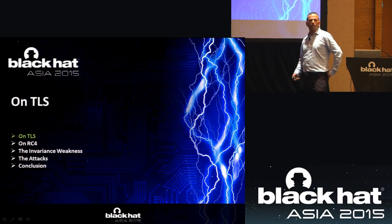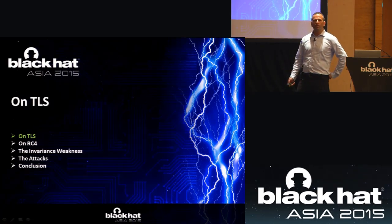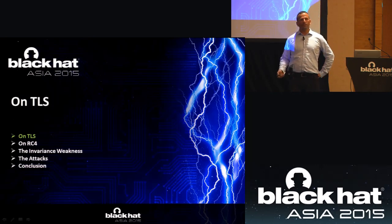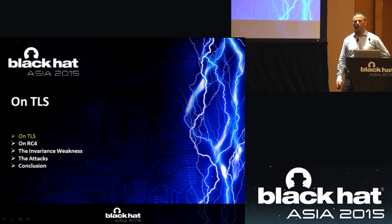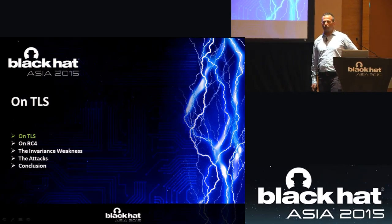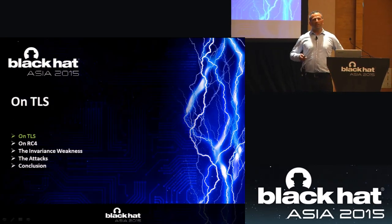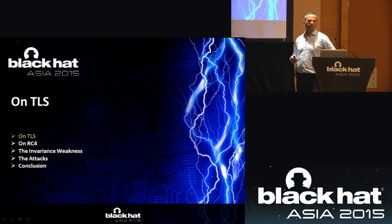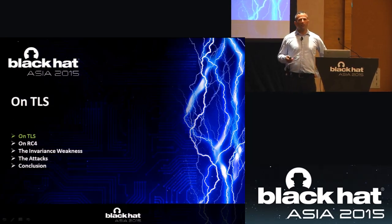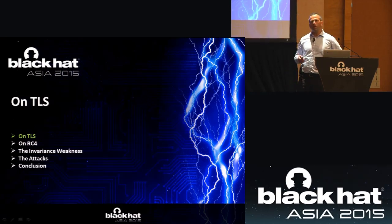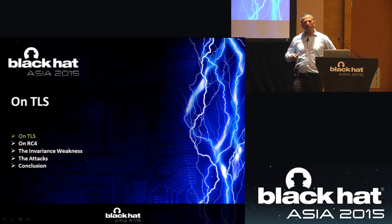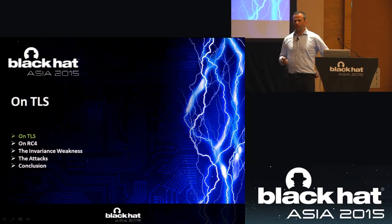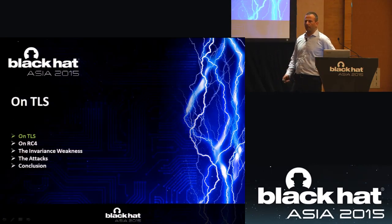I will give background on TLS — its objectives and current security. Then I will give background on RC4, go into details on the invariance weakness and its security implications. I will show several attacks that can be mounted using this vulnerability of RC4 when RC4 is the cipher used in TLS, and I will finalize with conclusions.